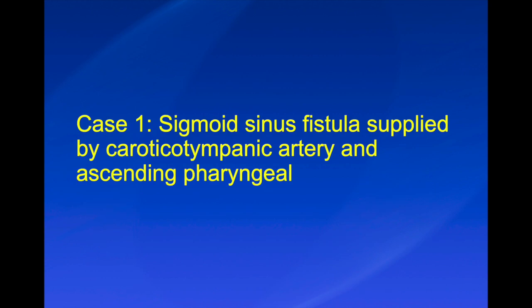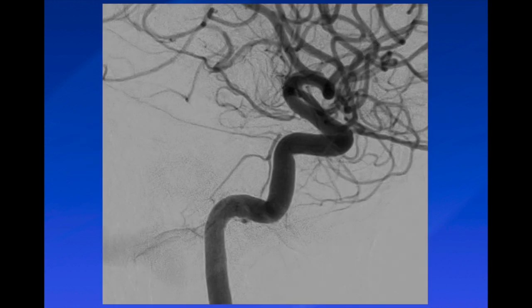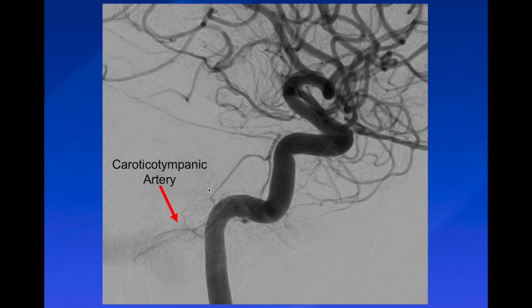Now I'll go over some cases that highlight these anastomoses and their clinical importance. Case one is a sigmoid sinus dural arteriovenous fistula supplied by the caroticotympanic artery as well as the ascending pharyngeal artery. On the internal carotid artery injection, we see a faintly opacified branch — the caroticotympanic artery — which is not typically visible on normal angiograms. It becomes evident in the setting of a tumor, fistula, or hypervascular lesion. There is a faint venous blush coming from the caroticotympanic artery off the petrous ICA.